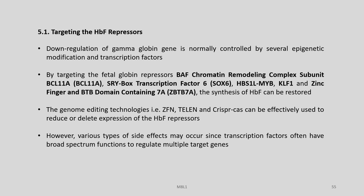Regarding targeting the HbF repressors: downregulation of gamma globin gene is normally controlled by several epigenetic modifications and transcription factors. By targeting the fetal globin repressors — the BAF chromatin remodeling complex subunit BCL-11A, SOX6 (SRY-box transcription factor 6), HBS1L-MYB, KLF1, and ZBTB7A (zinc finger and BTB domain containing 7A) — the synthesis of HbF can be restored. Genome editing technologies like ZFN, TALEN and CRISPR-Cas9 can be effectively used to reduce or delete expression of the HbF repressors.